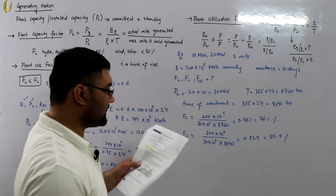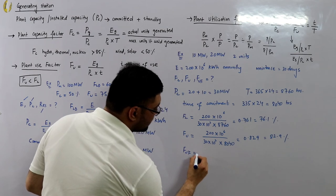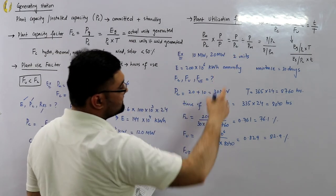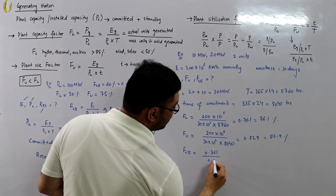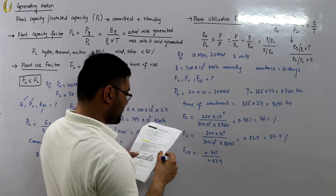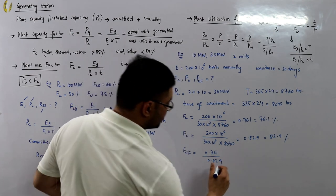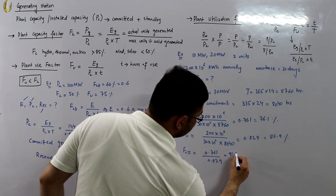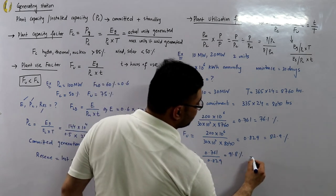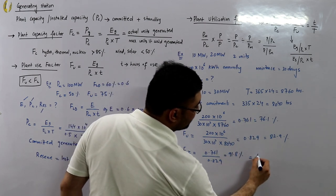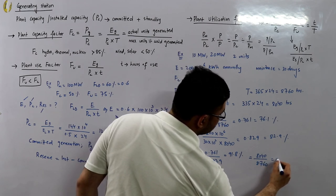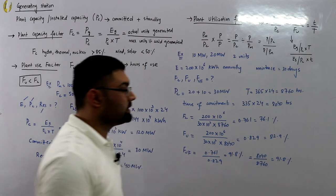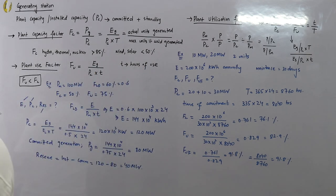The utilization factor is the ratio FC divided by FU: 0.761 divided by 0.829 equals 91.8%. This can also be verified as small t divided by capital T: 8,040 divided by 8,760, which also gives 91.8%. This confirms the relationship between all three factors.